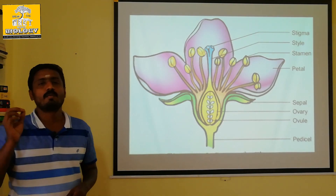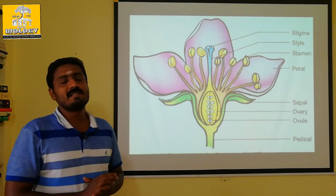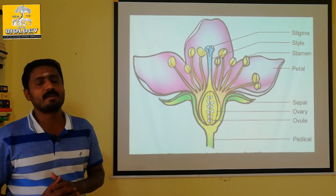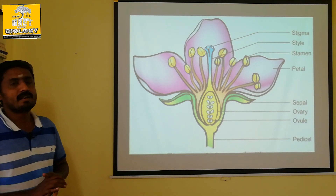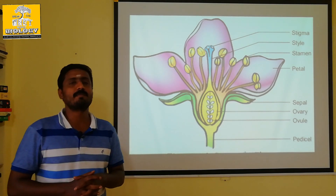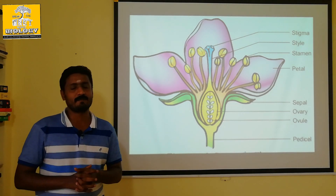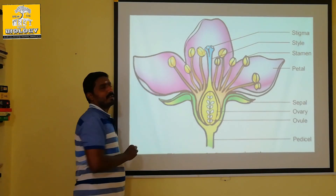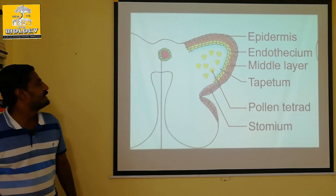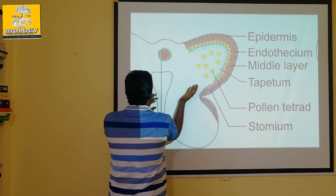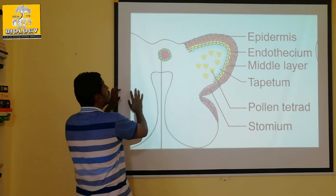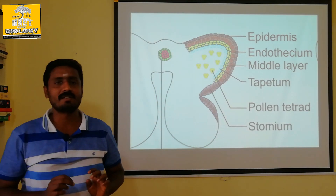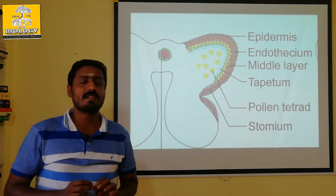When we look at a cross-section, how many layers are formed? Here is an anther cross-section. If you have a practical examination, there is Datura metal — you can cut the anther of Datura metal.